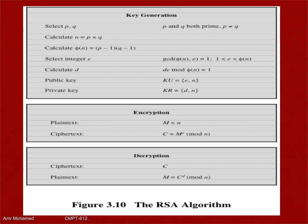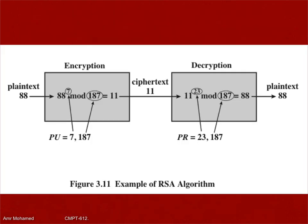Last time we started to talk about Chapter 3, public key cryptography. We talked about message authentication codes and the different methods to do that, and then we started to talk about the first public cryptography technique which is RSA. We talked about the protocol, the six steps, and we proved the reversibility for RSA.